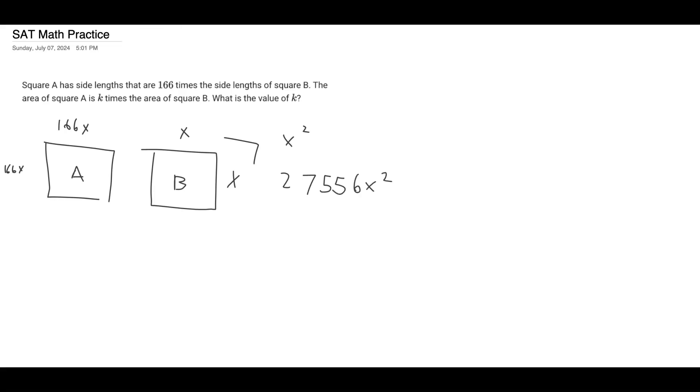Alright, so now we want to compare these two numbers, right? Because this is the area of square B, and then the one on the bottom is the area of square A. So how can we compare?